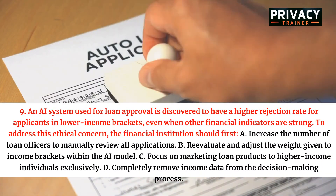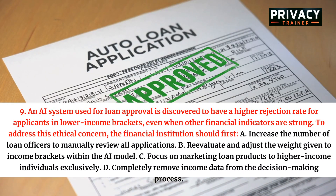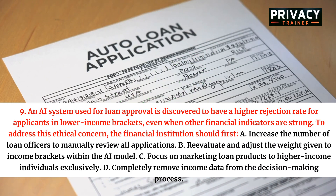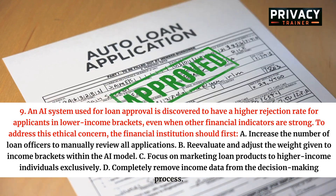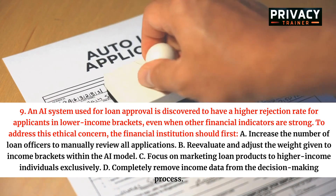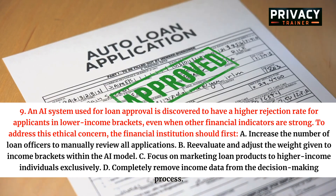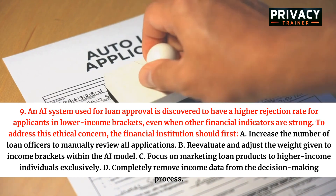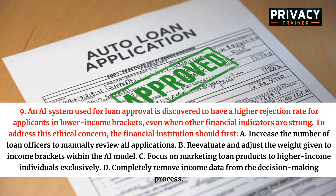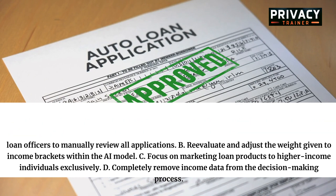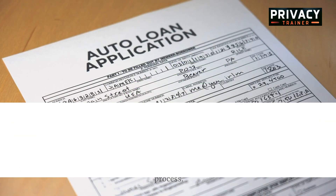Question 9. An AI system used for loan approval is discovered to have a higher rejection rate for applicants in lower-income brackets, even when other financial indicators are strong. To address this ethical concern, the financial institution should first: A. Increase the number of loan officers to manually review all applications. B. Re-evaluate and adjust the weight given to income brackets within the AI model. C. Focus on marketing loan products to higher-income individuals exclusively. D. Completely remove income data from the decision-making process.